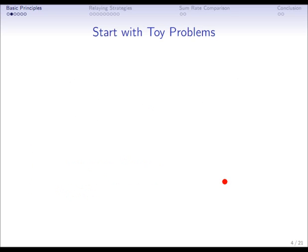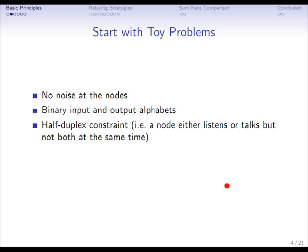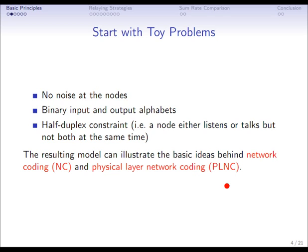Now we can with the help of some toy problems illustrate the ideas that are behind the strategies. We assume that for a moment there is no noise at the nodes, that the nodes have binary input and binary output alphabets, and that they are half-duplex constrained. That means that a node either listens or talks, but not both at the same time. The model that results is very simple, but nonetheless it can illustrate the basic ideas that are behind network coding and more importantly for this talk, physical layer network coding.